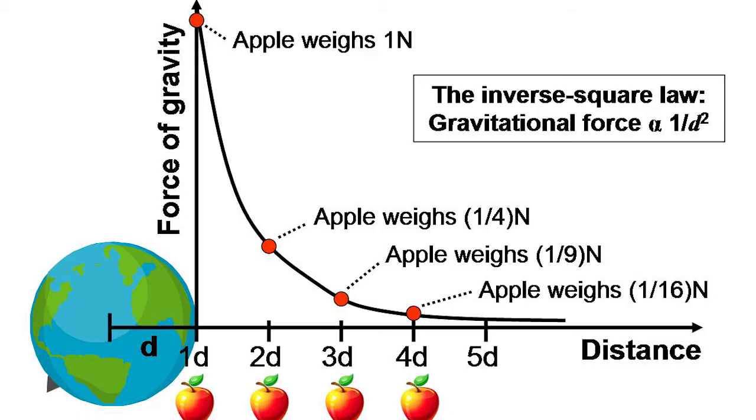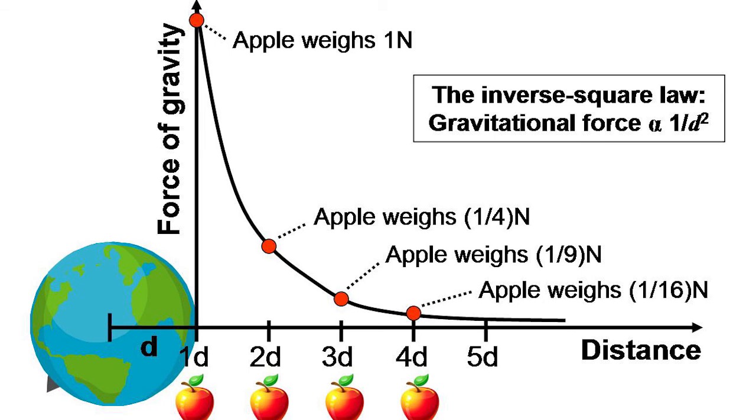If you make a graph of gravitational field or gravitational force against separation, you get this nice curved shape. This is the inverse square relationship in a graph, and again you can see how the force of gravity or the field of gravity gets 4 times weaker if you're twice as far away, 9 times weaker if you're 3 times further away, 16 times weaker if you're 4 times further away, etc.